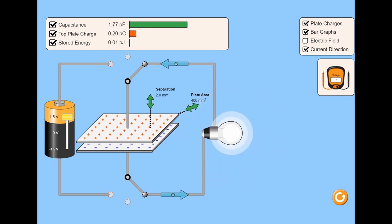Change the voltage by dragging the bar on the battery and see how the charge changes on the plates.